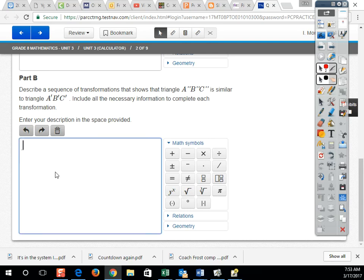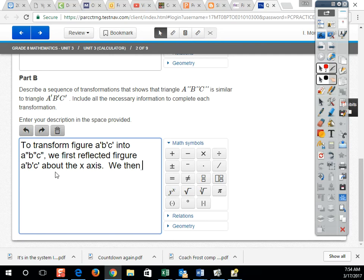Let's go ahead and type that. To transform figure A prime, B prime, C prime into A double prime, B double prime, C double prime, we first reflected figure A prime, B prime, C prime about the X axis. We then dilated the reflection from point 0, negative 3 with a scale factor of 2. And there we have it.